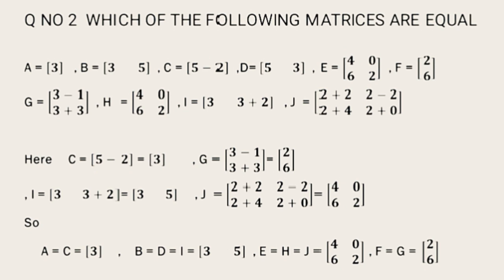Similarly, I: 3 plus 2 is 5, so it will be 3, 5. And J, we shall add all the 4 elements: 2 plus 2 is 4, 2 minus 2 is 0, 2, 4 is 6, and 2 plus 0 is 2. So now we can see easily that matrix A and C are equal, B and I are equal, and D is equal to none.